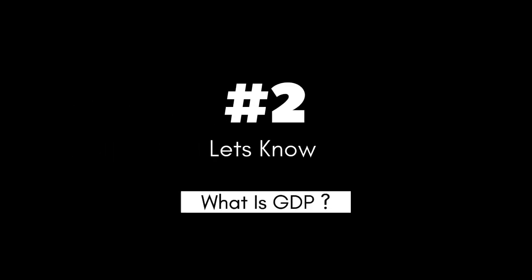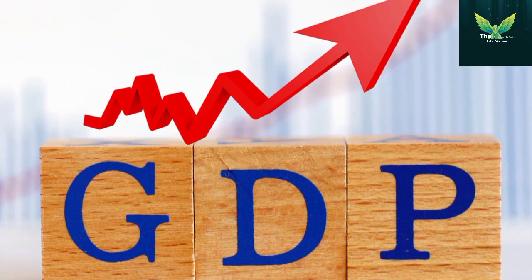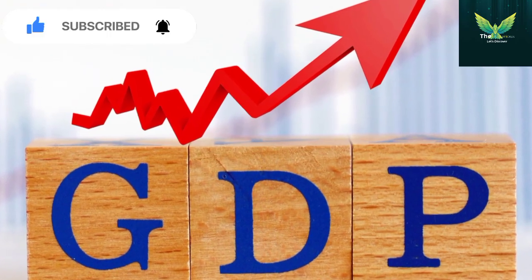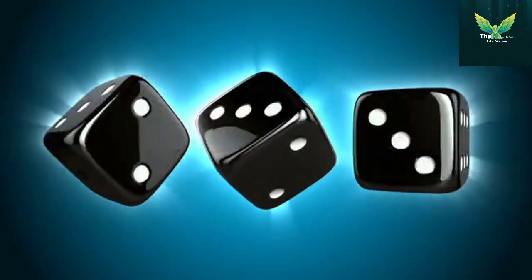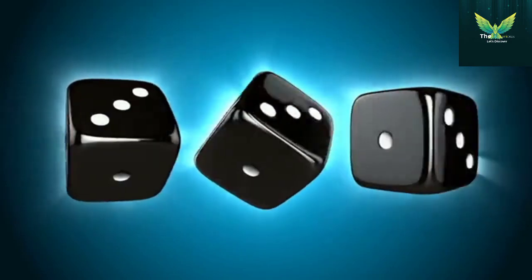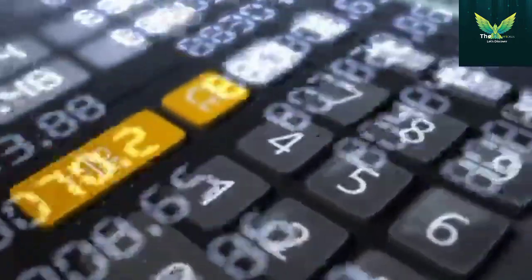What is the GDP of all countries in 2022? The world's current total GDP is $104 trillion as of 2022, based on IMF projections for the end of the year.